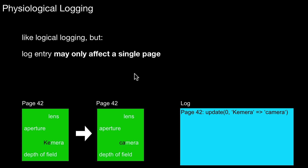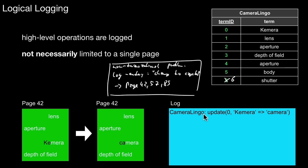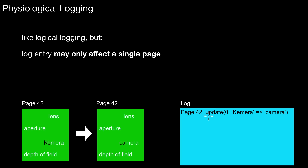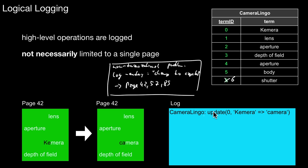Physiological logging is similar to logical logging, but it is restricted to a single page. In logical logging, the change is with respect to a table, a high-level structure which may span multiple pages. In physiological logging, we also record the high-level information; however, it is restricted to a particular database page. So it's a mix of the two: we have a physical concept in that we keep it per page, but the change is recorded as high-level information.